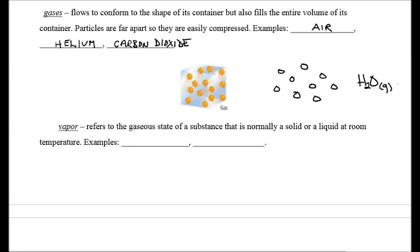If a substance is normally a liquid at room temperature, and we heat it up and turn it into a gas, it is considered to be a vapor. So water in the gaseous phase is water vapor. Bromine is normally a liquid at room temperature, so if we heat it up into the gas phase, it is called bromine vapor.